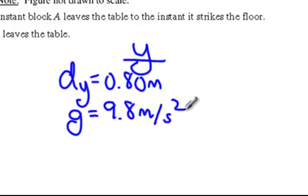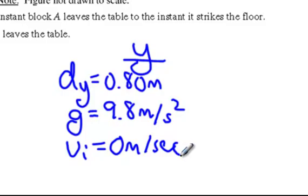We also know that the initial velocity in the Y is 0 meters per second. And that's going to really help us out to be able to find the time.